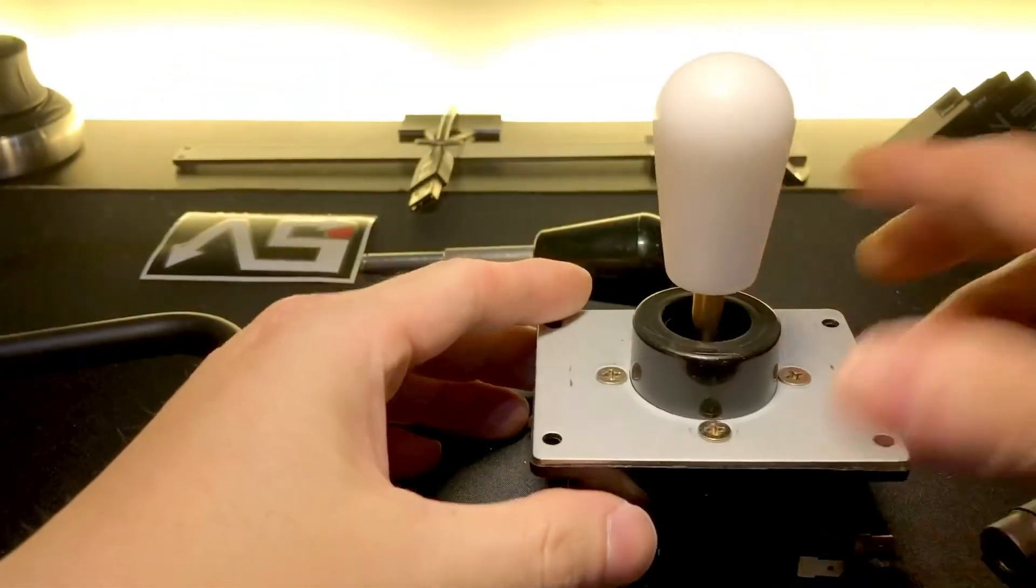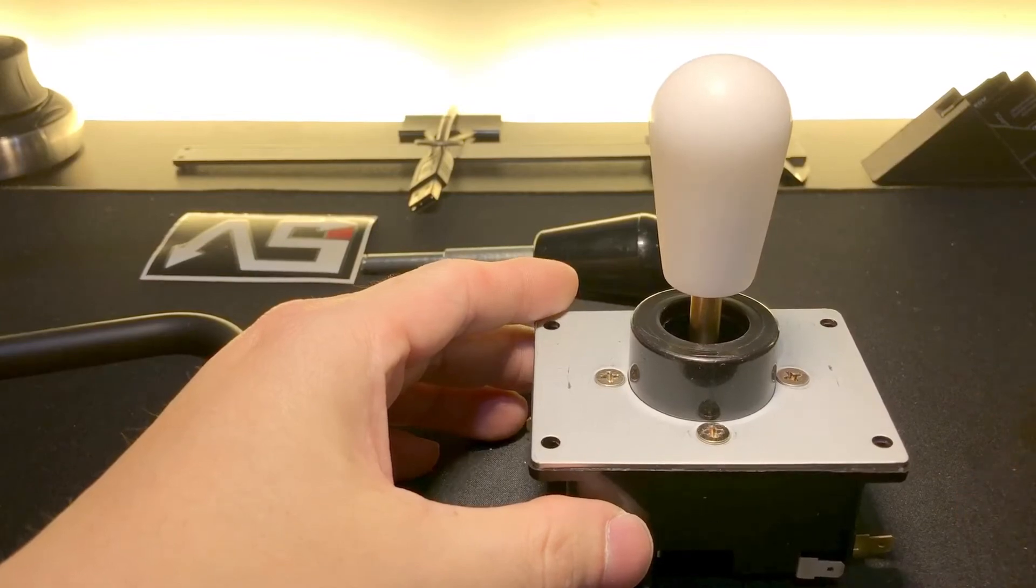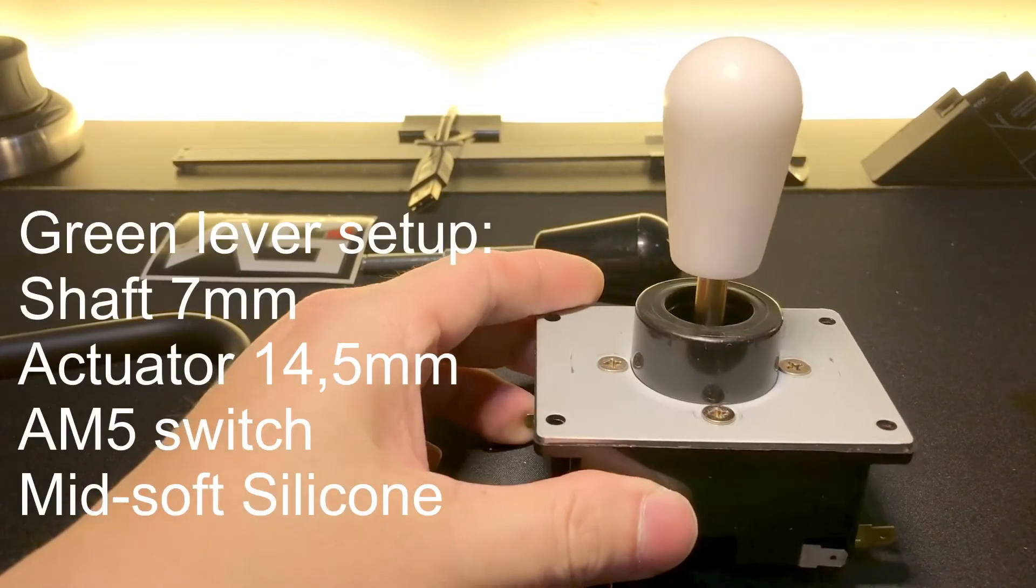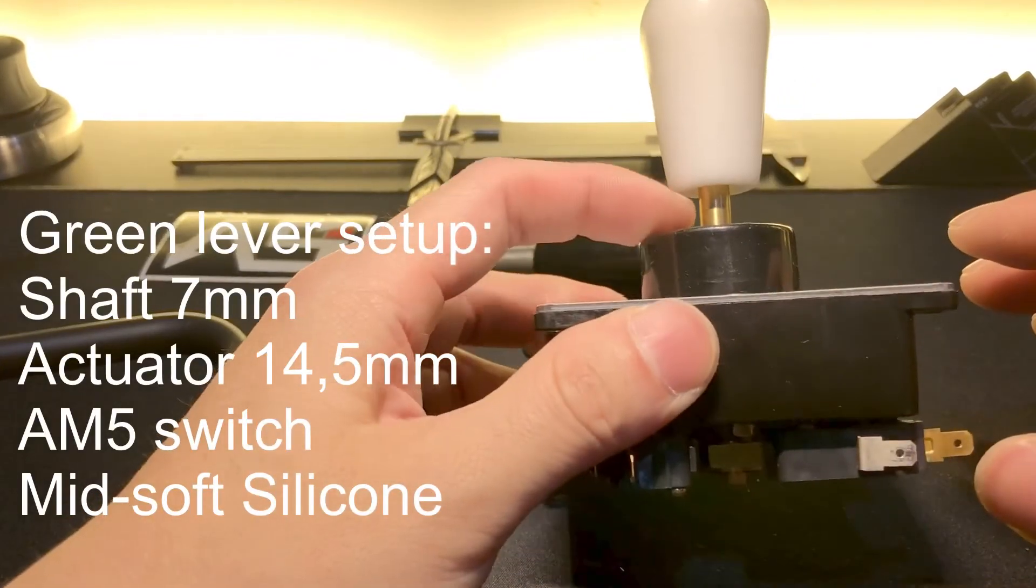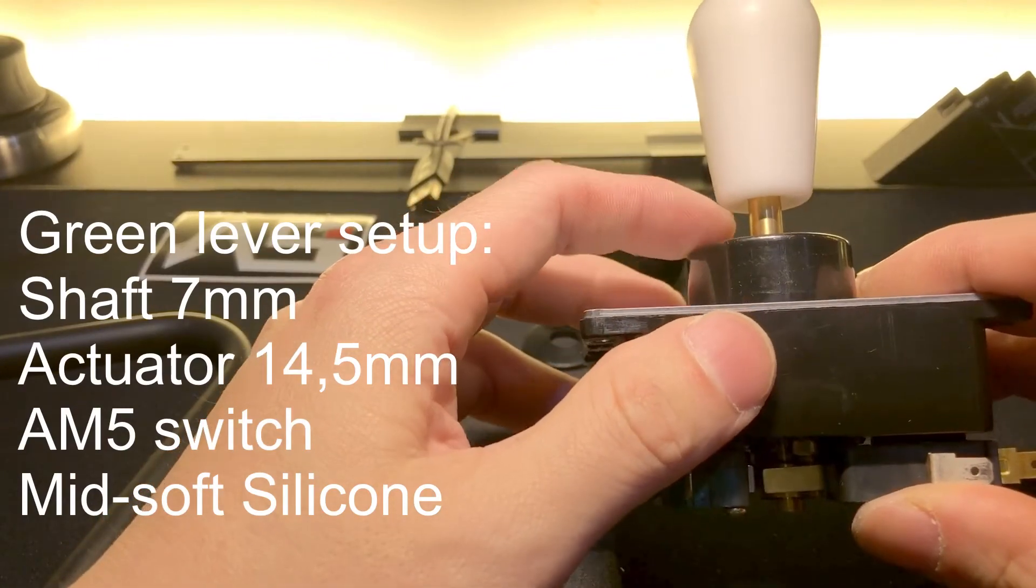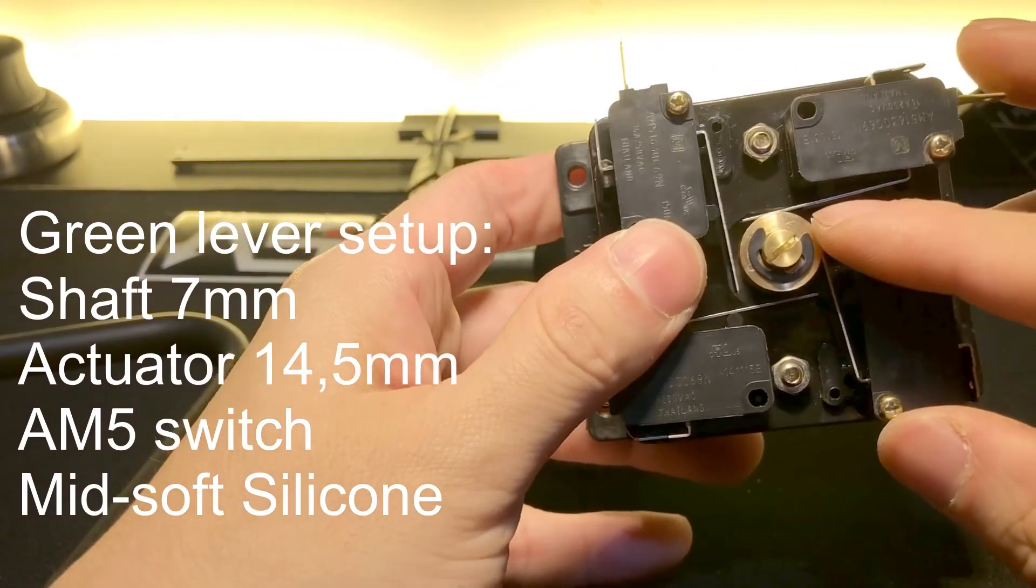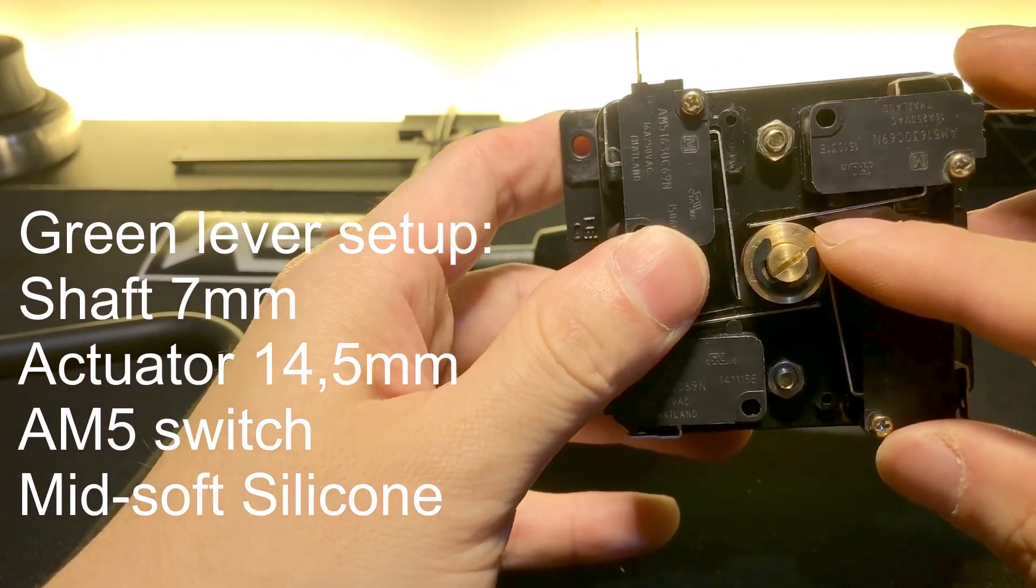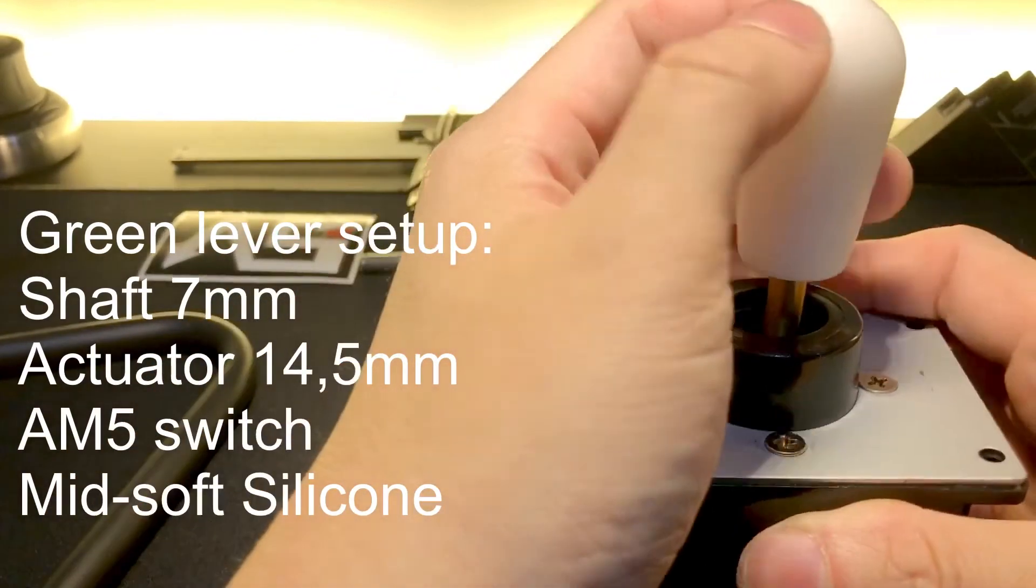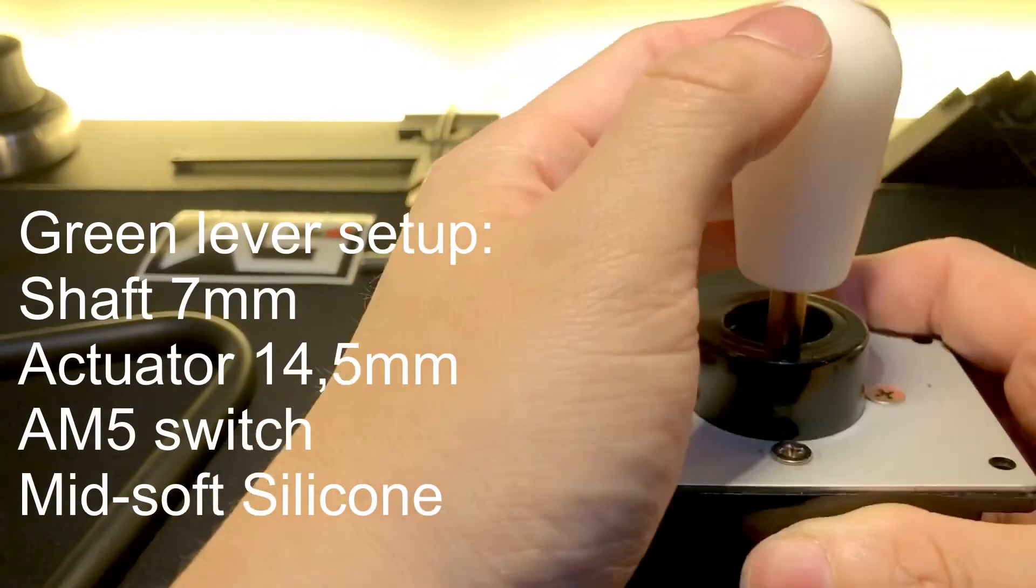Now you have a Green Arcade setup. In Green Arcade Korea, they have Green lever. Green lever uses 7 millimeter shaft and 14.5 millimeter actuator, so Green lever players will prefer this setup.